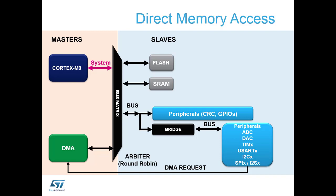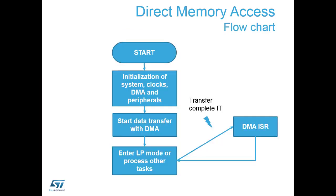There is an arbiter inside the bus matrix so that the DMA cannot steal too many cycles and impede what the Cortex core is doing. The DMA flow starts just as before: initialize clocks and peripherals, start the DMA transfer, then either process something else or enter low power mode. Just like interrupts, we'll get an interrupt to say half complete or fully complete, go off and process the DMA interrupt service routine, and then come back to low power mode or normal task.